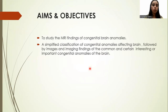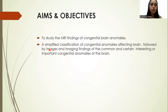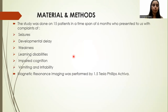The aim and objective of the study is to study the MRI findings of congenital brain anomalies, provide a simplified classification of the congenital anomalies affecting the brain, followed by the images and imaging findings of the common, uncertain, interesting, or important congenital anomalies of the brain.